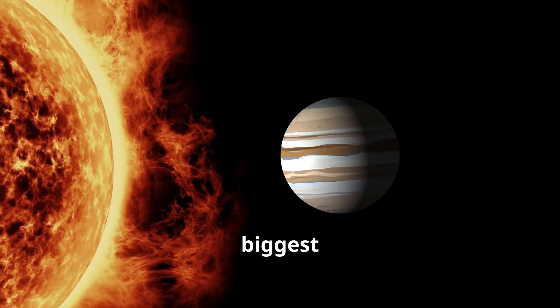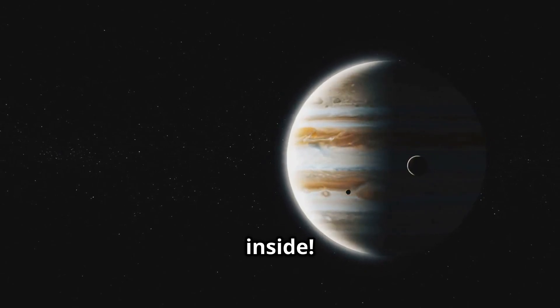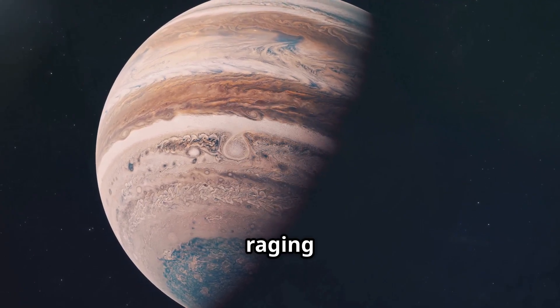Jupiter is the biggest planet. It's so big that over 1,300 Earths could fit inside. It also has a giant storm called the Great Red Spot that has been raging for centuries.